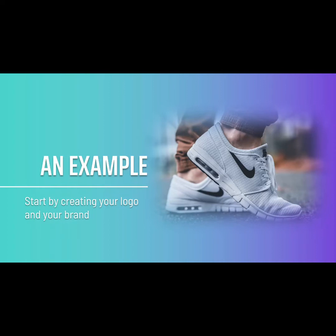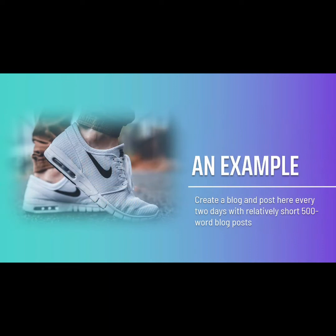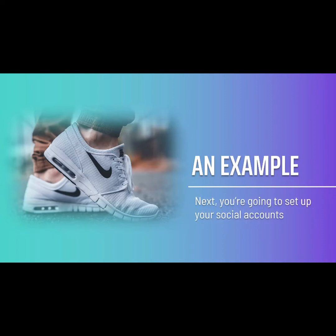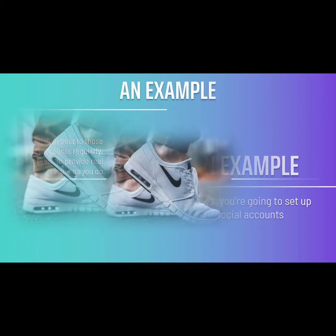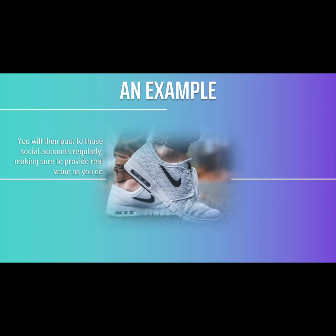Start by creating your logo and brand, identify your buyer persona — the exact person you're selling to — and your mission statement. Then create a logo and site design that expresses this. Create a blog and post every two days with relatively short 500-word blog posts. These aren't particularly SEO optimized but are aimed to work well on social with strong, eye-catching titles. Next, set up your social accounts. Try to get your company onto as many different platforms as possible, using your company name and logo on every single one.